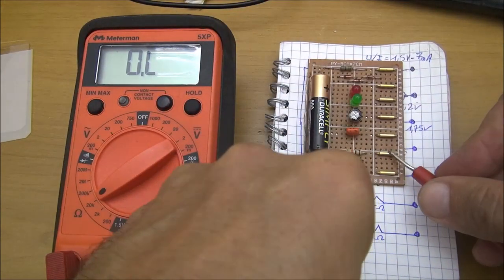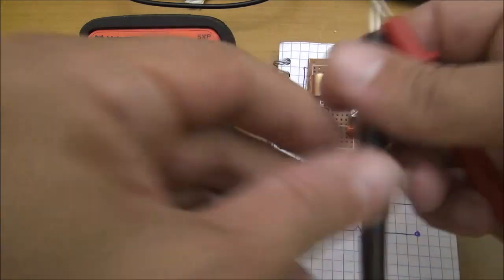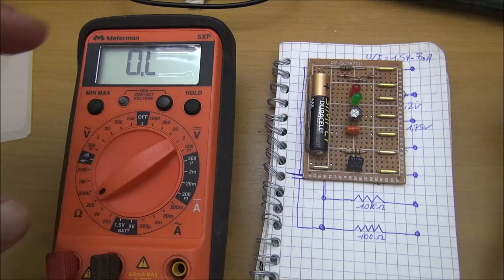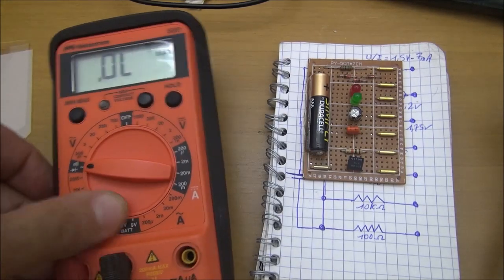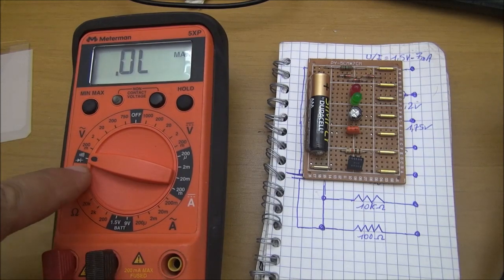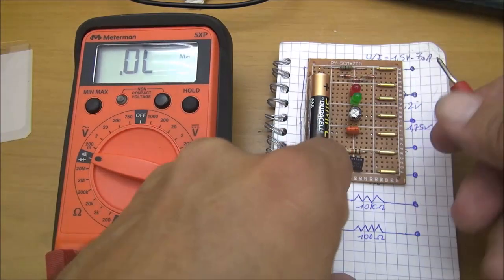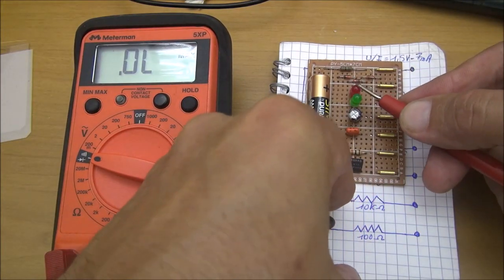This multimeter doesn't have the caliber to check capacitors, so I will just put the diode caliber and test how diodes react. You have here a red and a green LED.